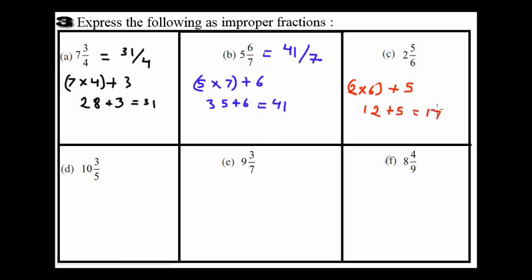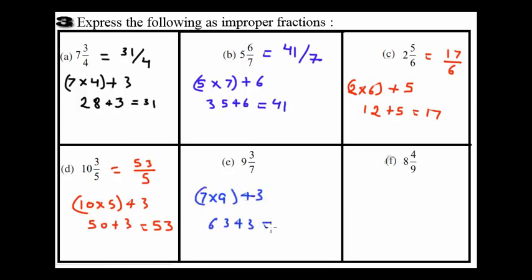Twelve plus five gives you seventeen. Ten times five plus three, fifty plus three, fifty-three, so fifty-three over five. Nine times seven plus three, sixty-three plus three would give you sixty-six, sixty-six over seven is your answer. Last, eight times nine is seventy-two, plus four would give you how much, seventy-two plus four gives you seventy-six. This is how you do it to make it improper fractions.